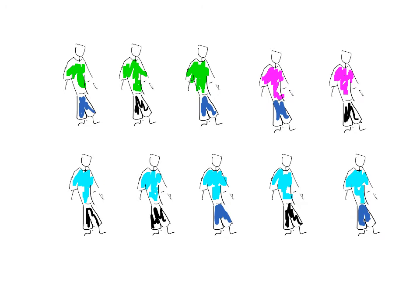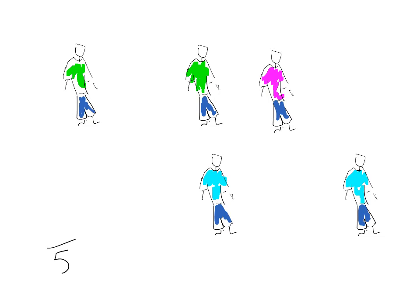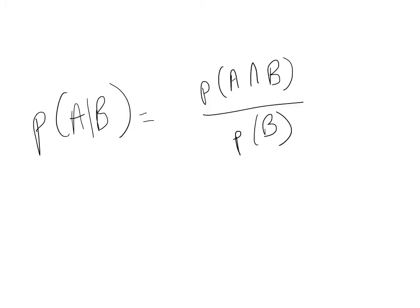As an example, say we have a group of ten people dressed in different colored clothing. Say we're interested in the probability that somebody is wearing a green shirt given that they're wearing blue pants. These are all the people wearing blue pants — there are five of them. Two out of the five are wearing a green shirt, so the probability of wearing a green shirt given blue pants is two out of five, or 0.4. The formula for conditional probability of A given event B is the intersection between A and B divided by the probability of B.